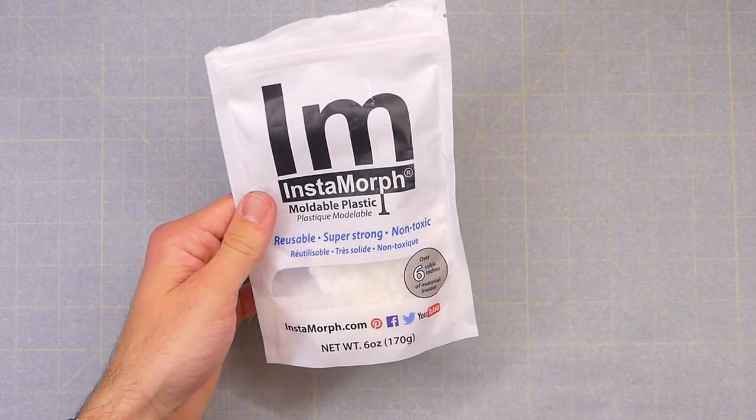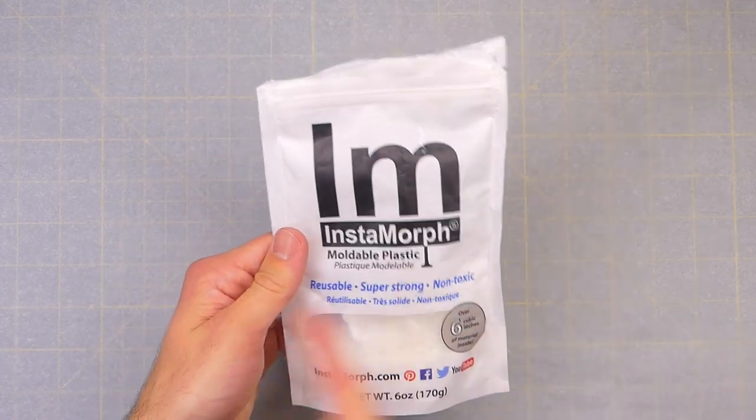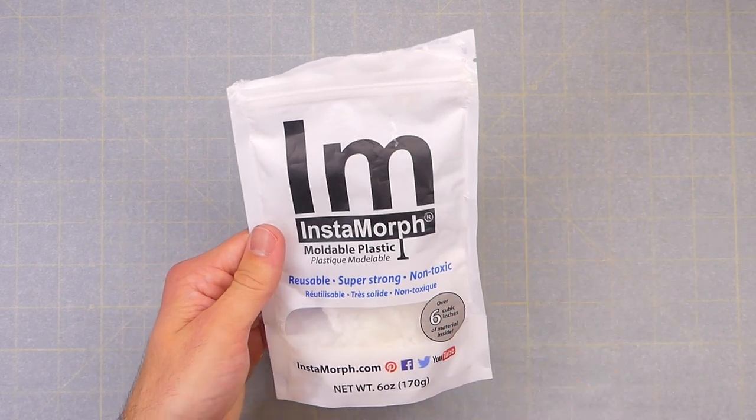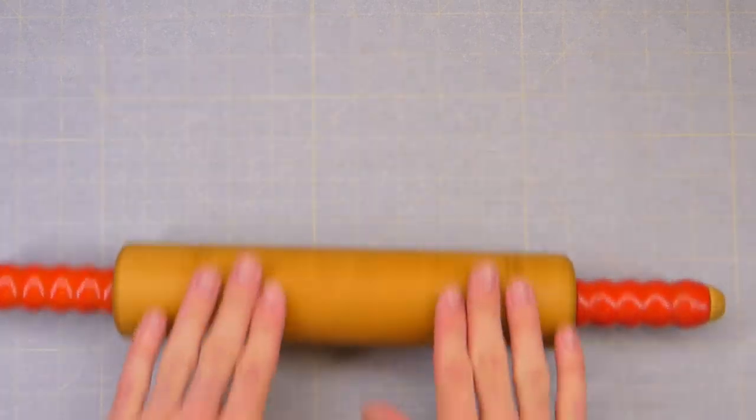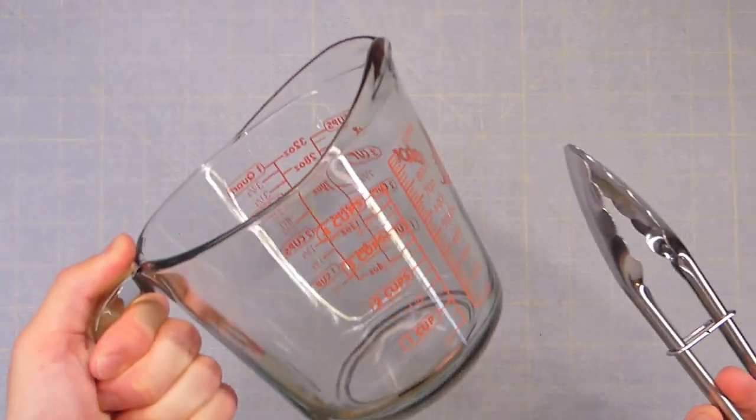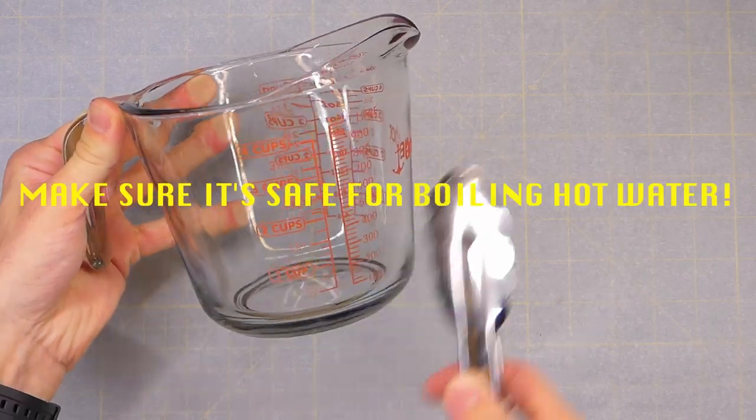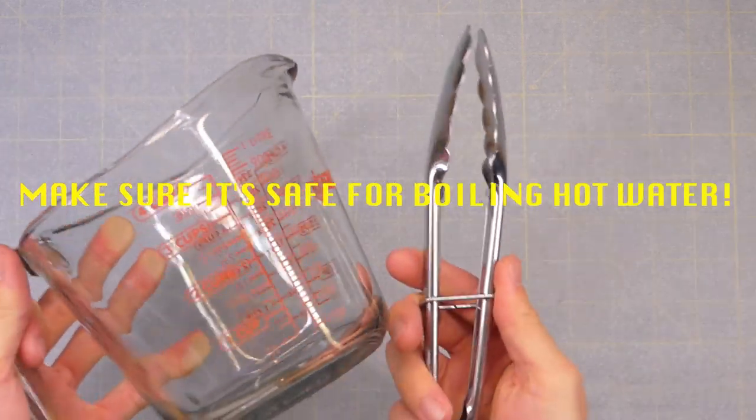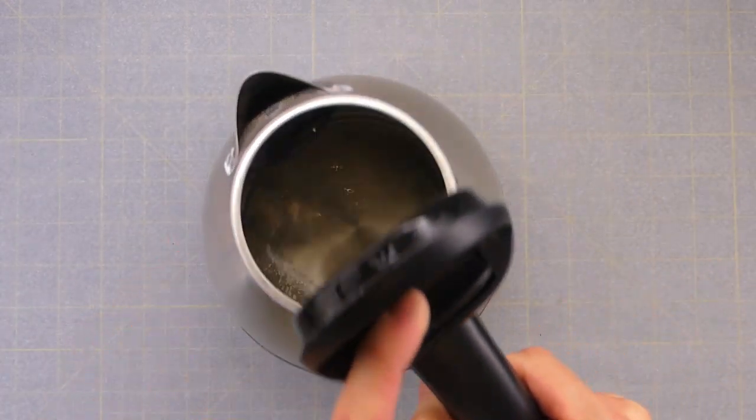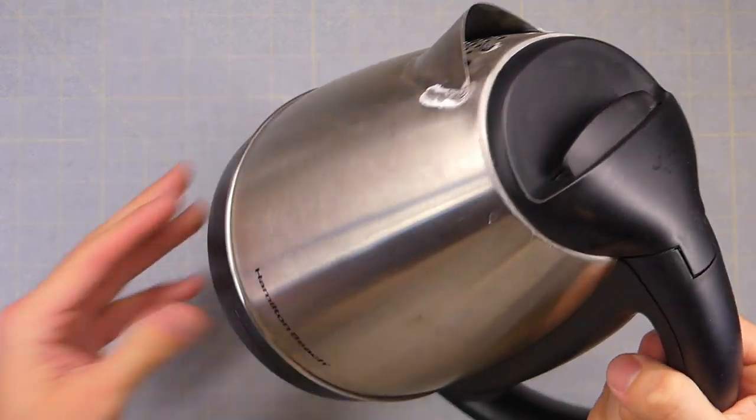We're gonna need some InstaMorph. You can get this from probably any craft store. I got mine from Amazon, link in the description. We might need a rolling pin, something to roll and flatten things out, and we're gonna need a glass bowl or in this case a Pyrex pouring bowl, and then some tongs because we're gonna be working with hot water and hot InstaMorph.